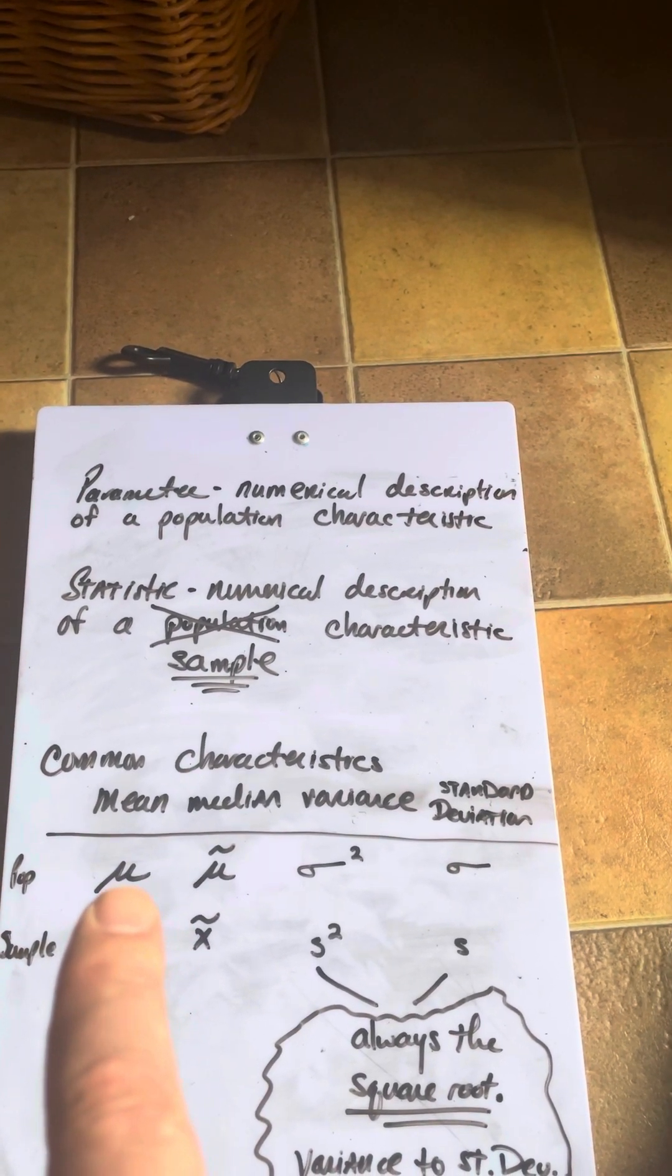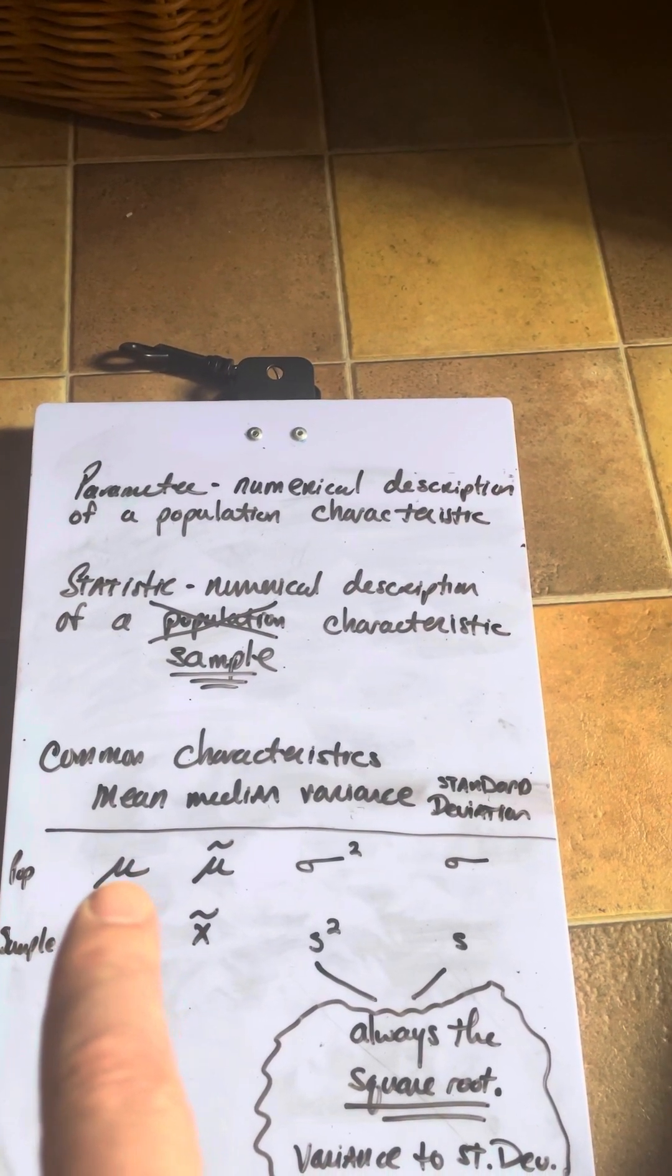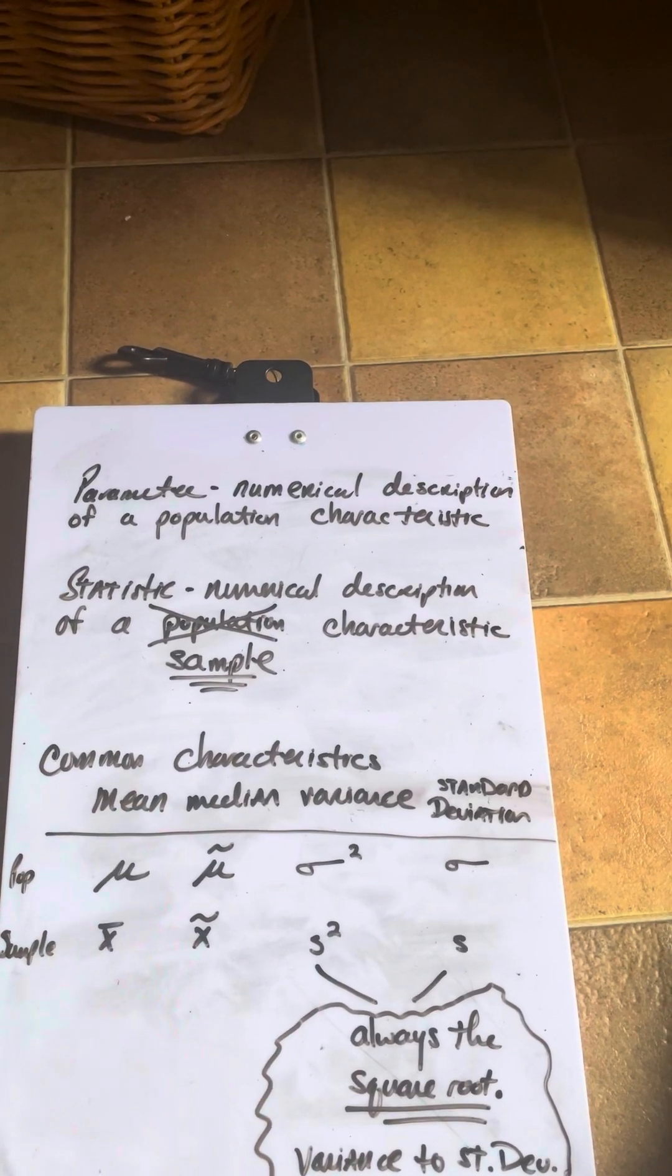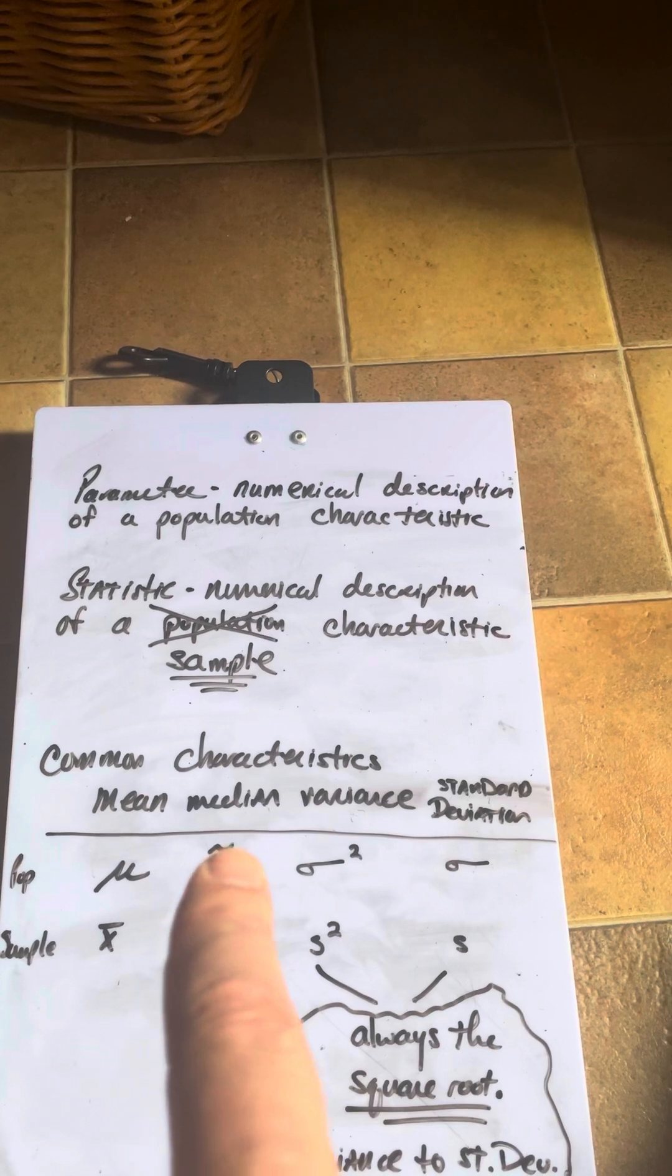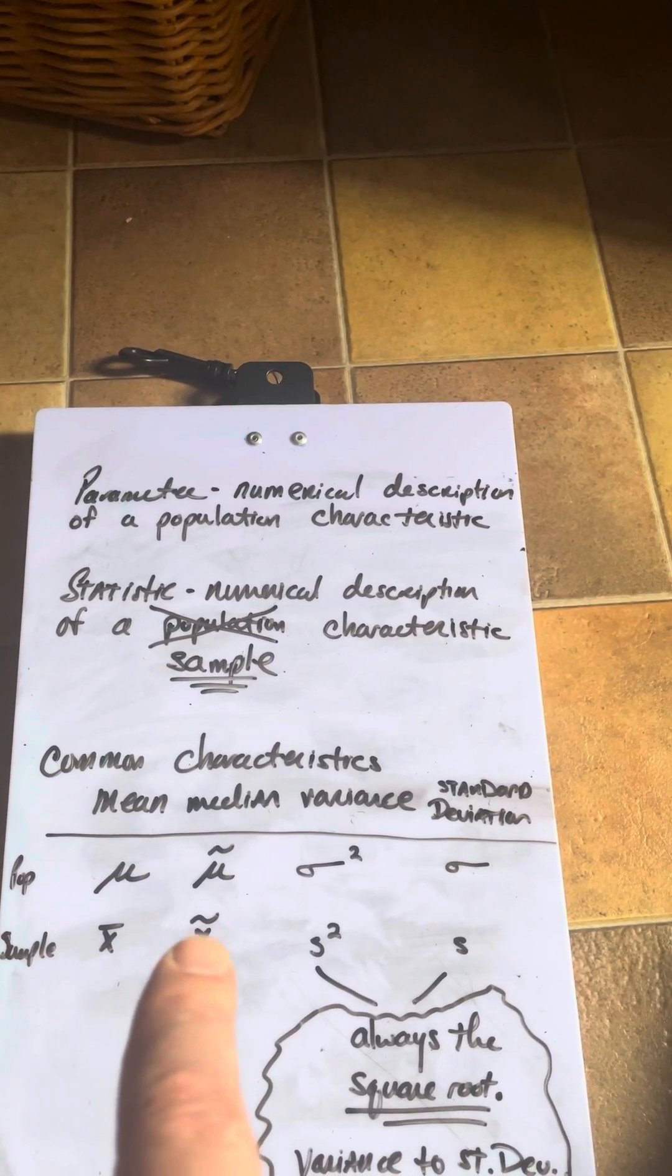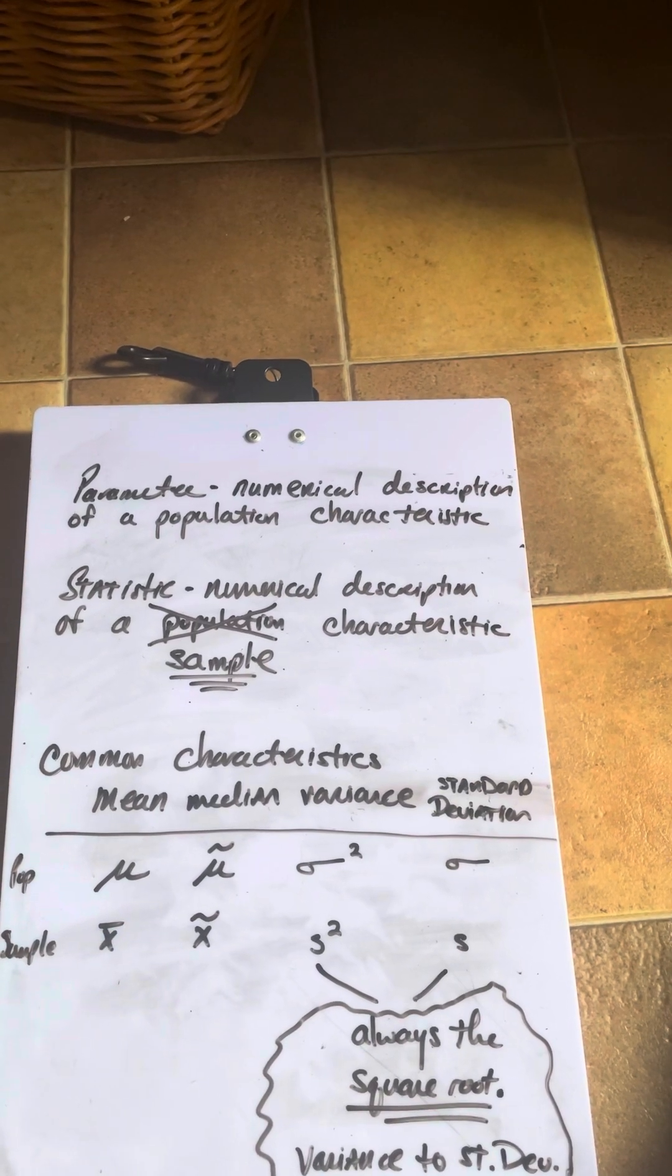Now, mu is like the cursive letter U with a long tail in front. And that's the mean. The median is mu tilde. For the sample, it's x tilde instead of x bar.